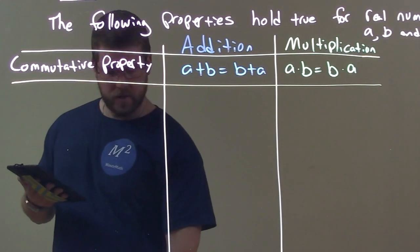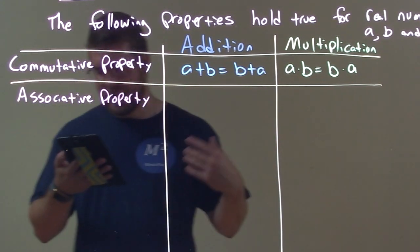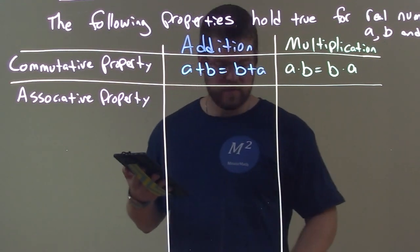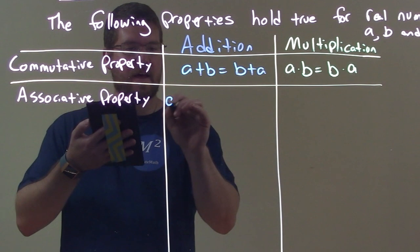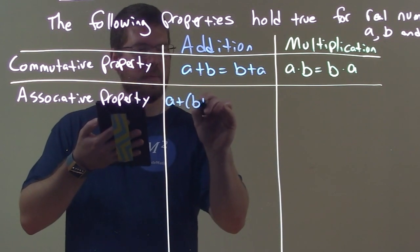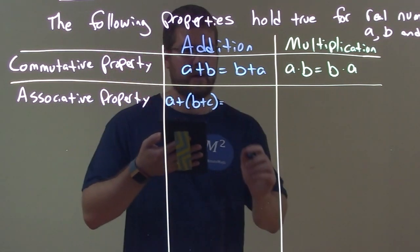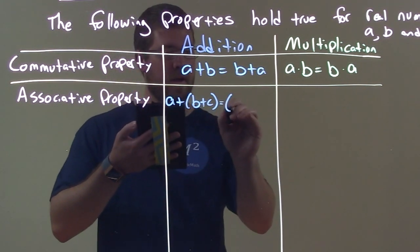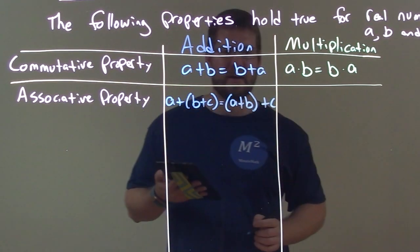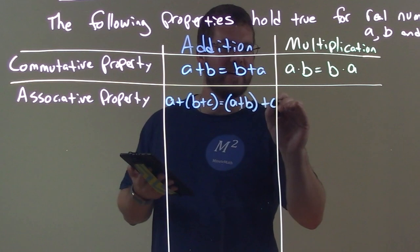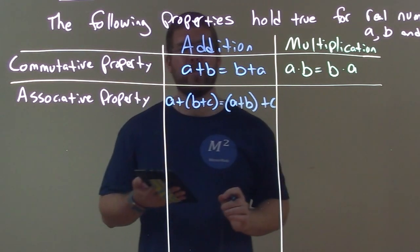The next one here is the associative property, and again we're going to have that with addition and multiplication. This one's a little trickier. What it says is that A plus B plus C in parentheses is the same thing as A plus B in parentheses, plus C on the outside. That's our associative property of addition.